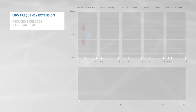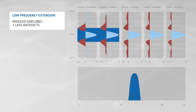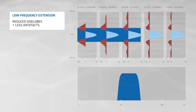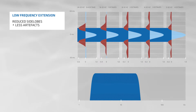Conversely, adding additional low-frequency information does not change the overall width of the seismic signal, but reduces the so-called side lobes next to the central peak. This reduces artifacts and leads to cleaner event separation.